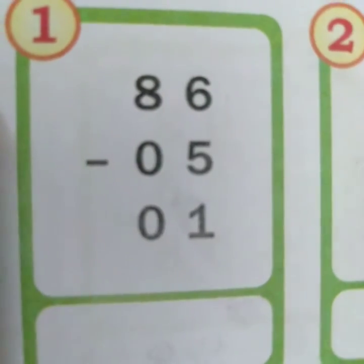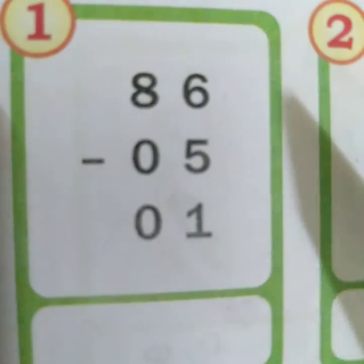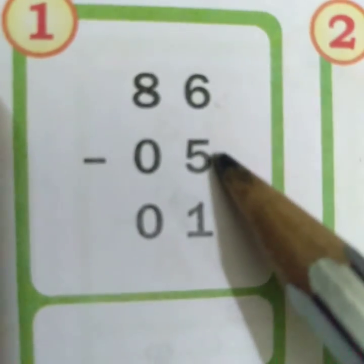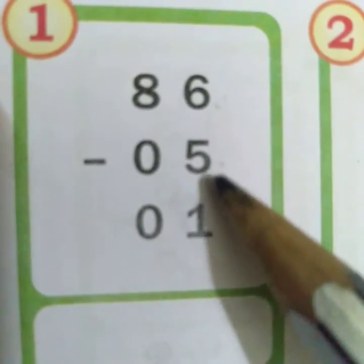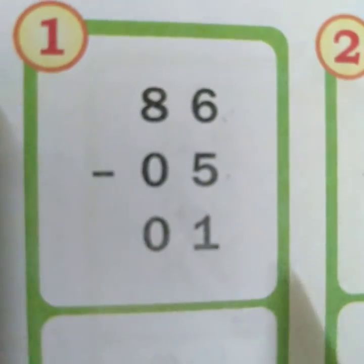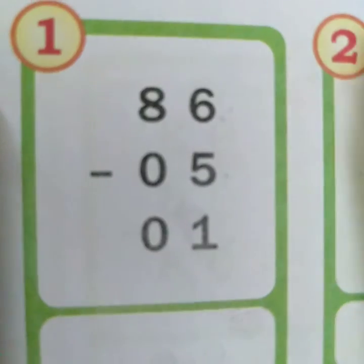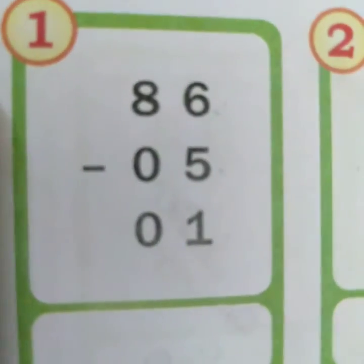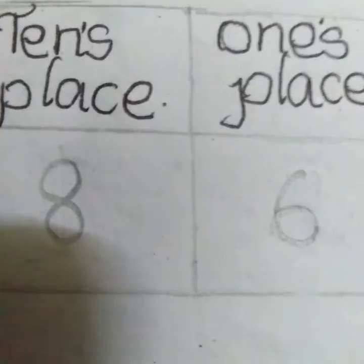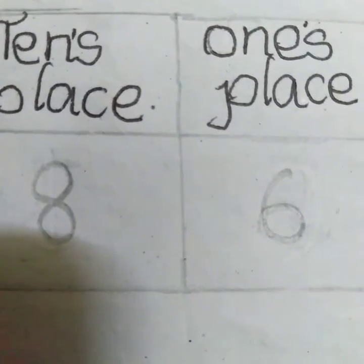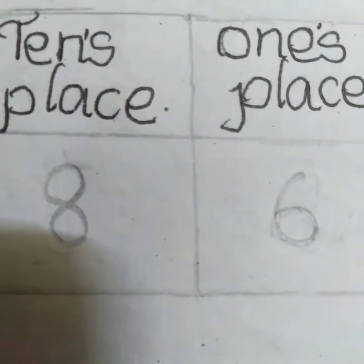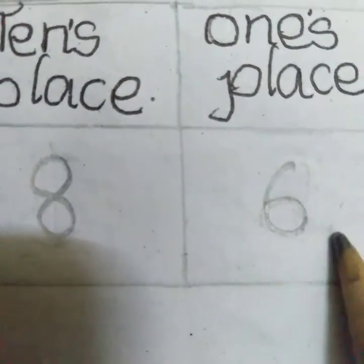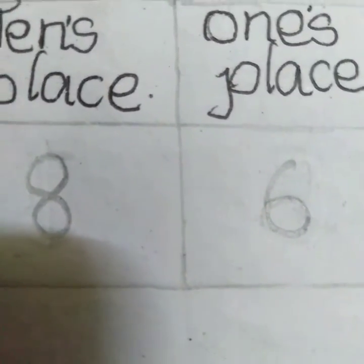The first example is: add 86, subtract 5, and add 1. The first step is to add 86. 86 is a 2-digit number — in the 10's place 8 and in the 1's place 6.